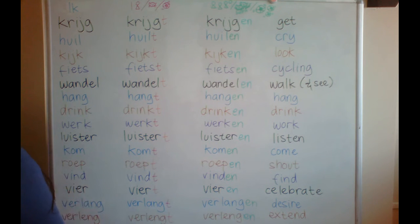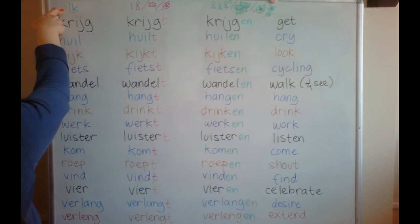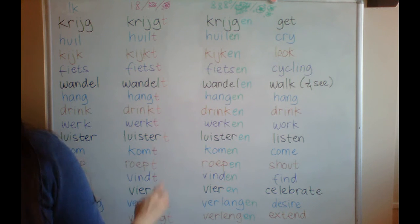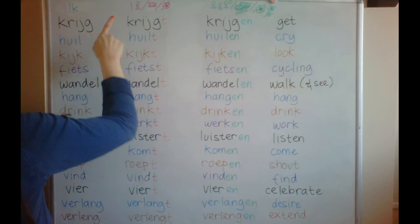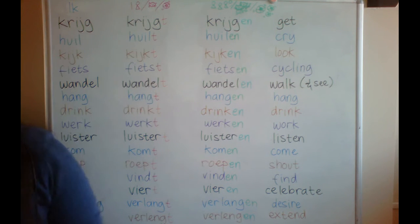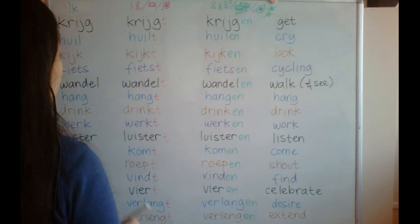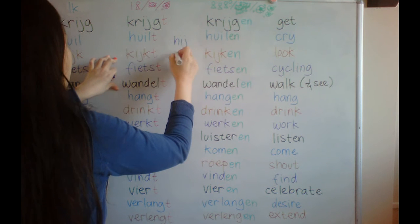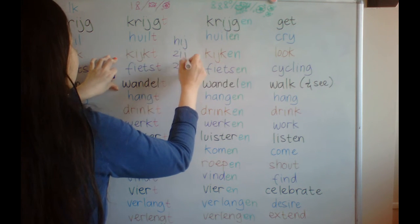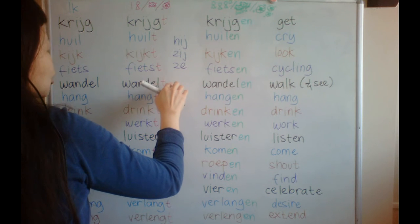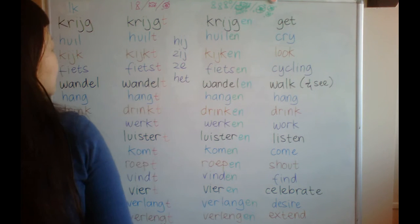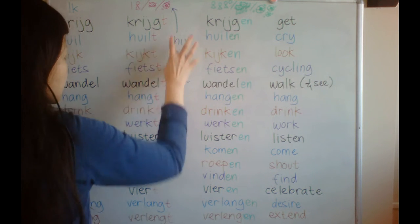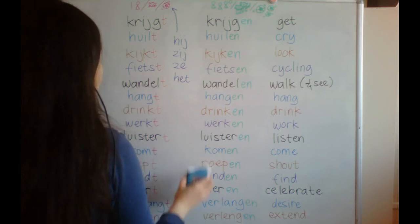Let's start. This column is used for 'ik' — 'ik' means I. And this column is used for a subject that consists of one: one person, one animal, one thing. 'Hij' is he, 'ze' or 'zij' is she, 'het' is it. We use this column because the subject consists of one — he, she, it.